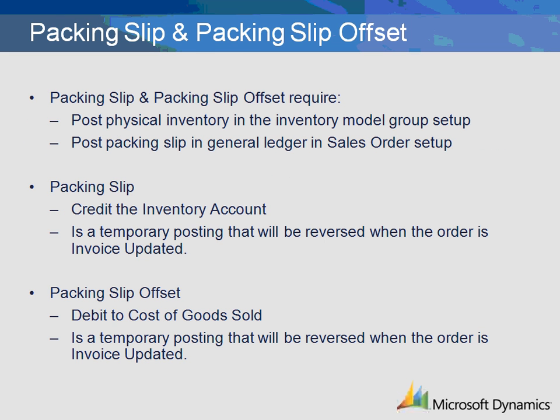The packing slip and packing slip offset transactions will create a financial posting if Microsoft Dynamics AX has the following two situations set up: one, post physical inventory in the inventory model group setup; or two, post packing slip in the general ledger in the sales order setup. The packing slip transaction will record a credit to the ledger account entered with a debit offset to the packing slip offset account transaction. These are temporary postings that will be reversed when the sales order is invoice updated in Microsoft Dynamics AX. If you choose to use this functionality, both settings above must be enabled.